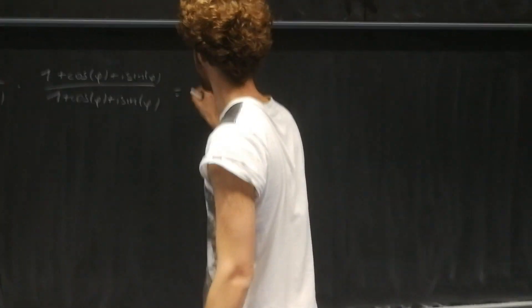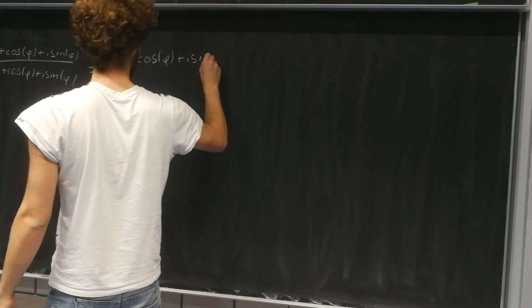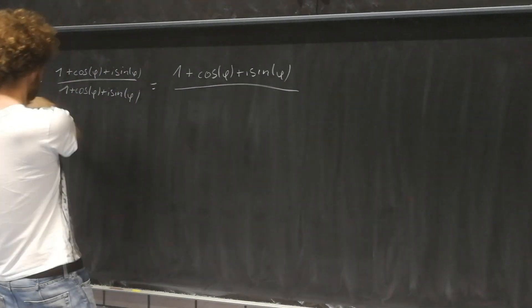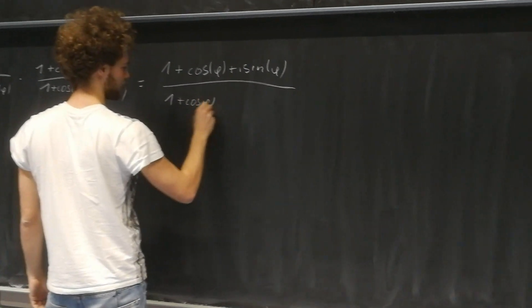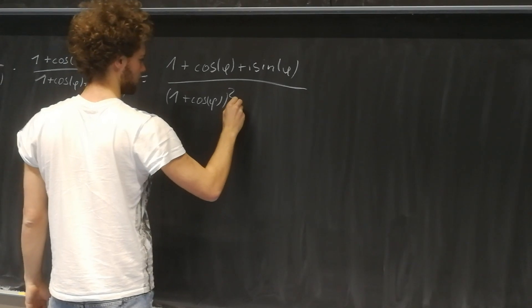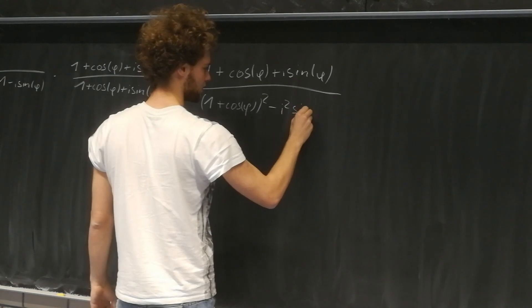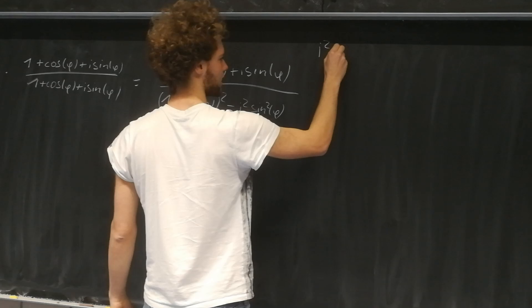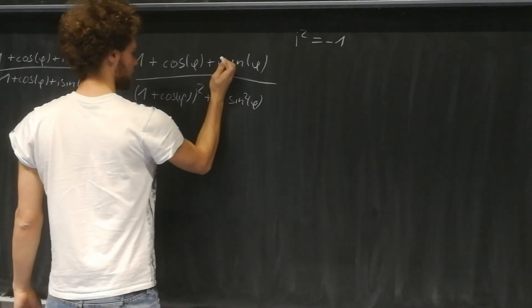Then the denominator stays the same, and the denominator is these two squared with i squared. So 1 plus cosine of phi squared minus i squared times sine squared of phi. And now i squared is just minus 1, so this becomes plus 1 here.